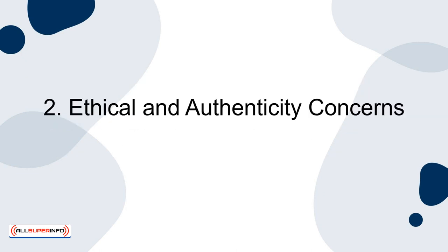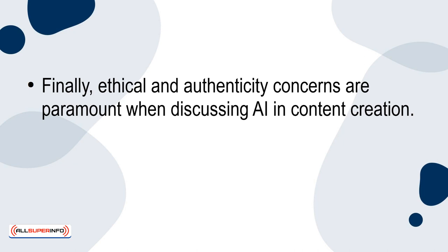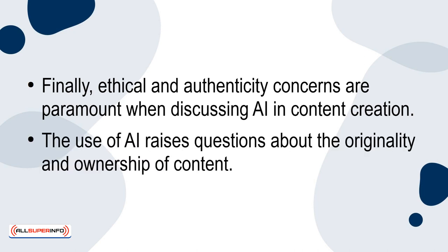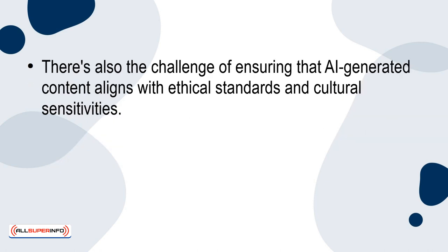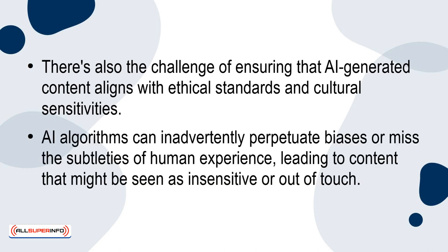Con number 2: Ethical and Authenticity Concerns. Ethical and authenticity concerns are paramount when discussing AI in content creation. The use of AI raises questions about the originality and ownership of content. There's also the challenge of ensuring that AI-generated content aligns with ethical standards and cultural sensitivities. AI algorithms can inadvertently perpetuate biases or miss the subtleties of human experience, leading to content that might be seen as insensitive or out of touch.